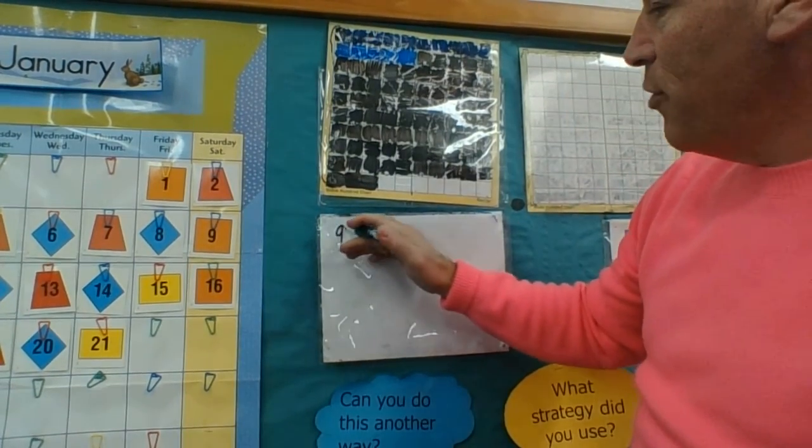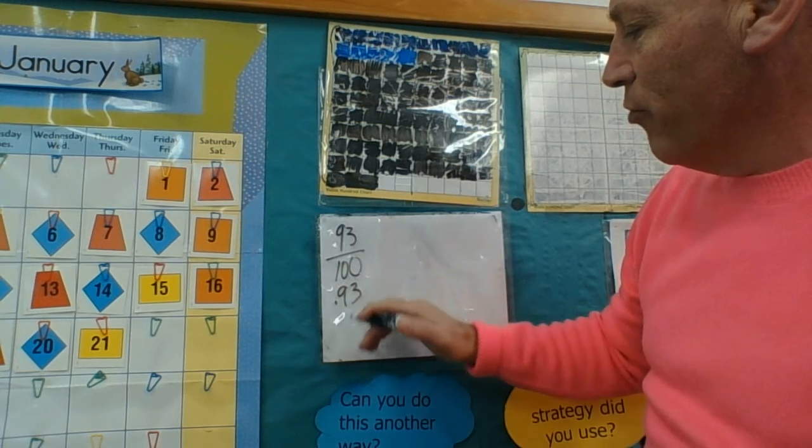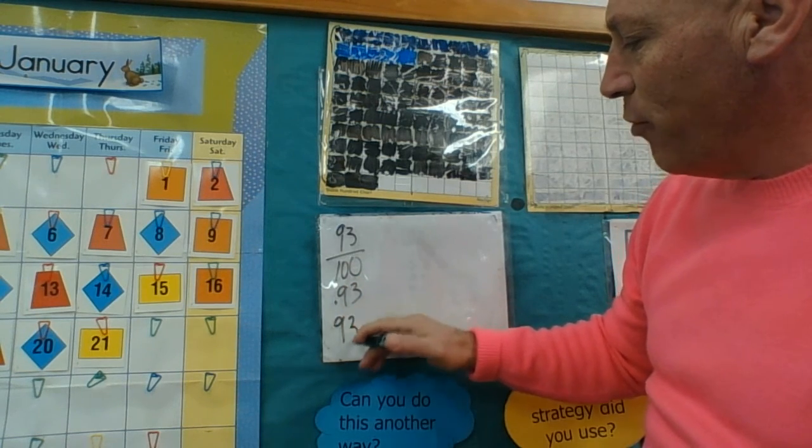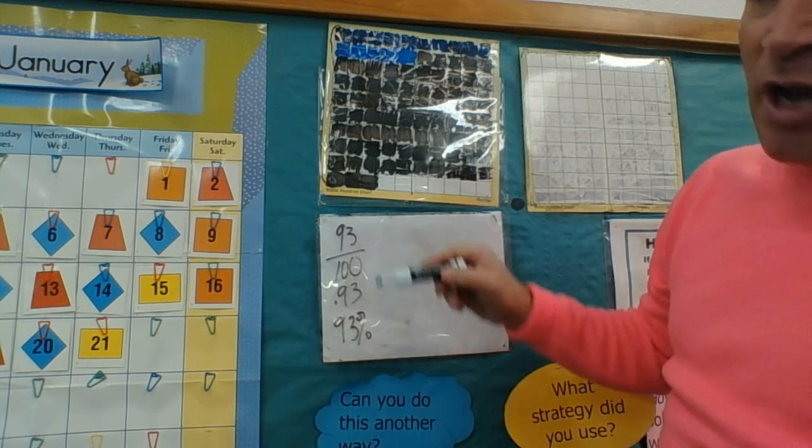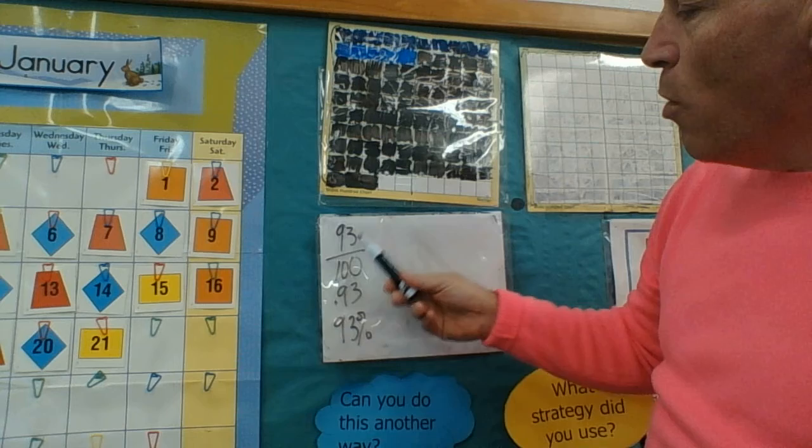And now for application we have 93 out of 100, which is the same thing as 93 hundredths and 93 percent. Now 93 is a fun number for me to find its factorization because most numbers end in 3.